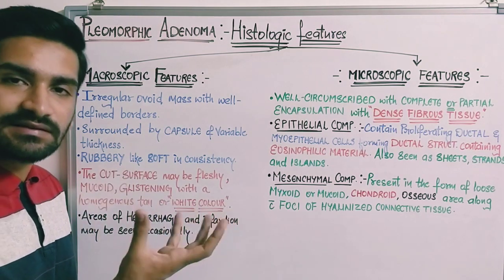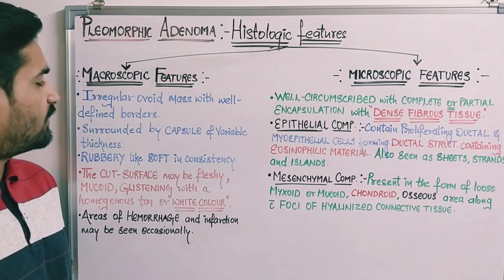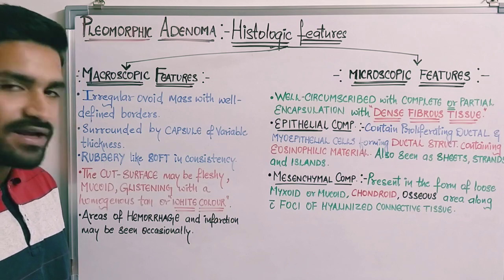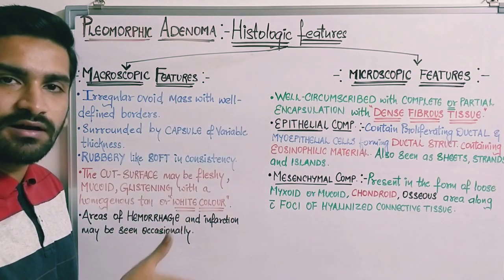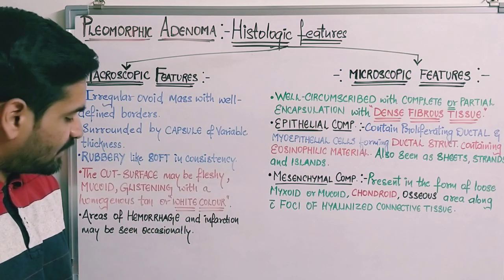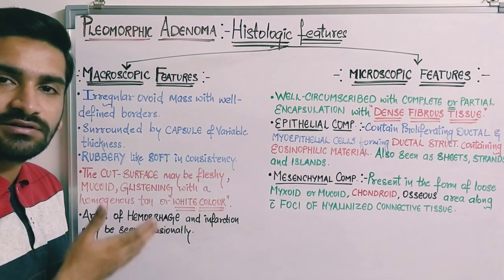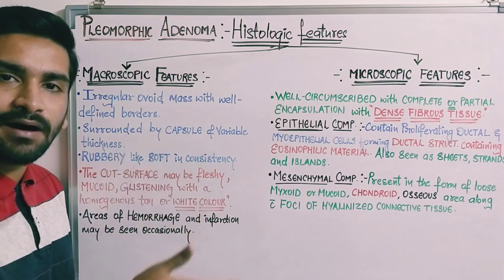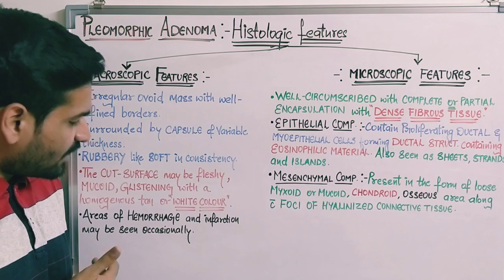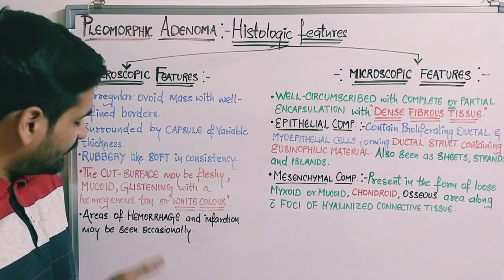The tumor has a rubbery and soft consistency. If you feel the tumor, it will be rubbery and soft. The cut surface may appear fleshy — if you cut the tumor and examine it, it will look fleshy with a lot of mucus, because the mucoid component is part of the mesenchymal component of pleomorphic adenoma.